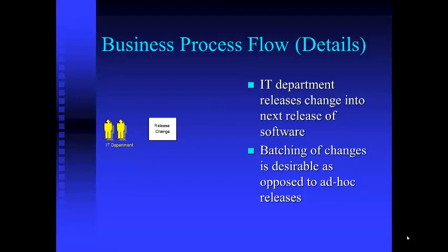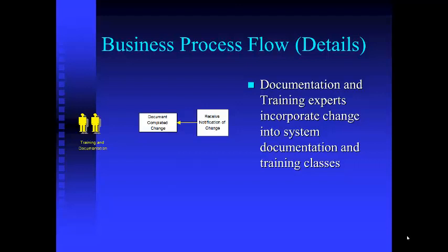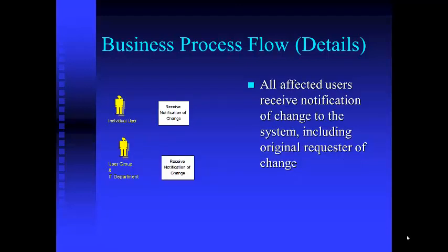Batching of changes — putting them all together into a larger group and releasing perhaps once a week or twice a month — is more desirable than ad hoc releases because it keeps the system stable. The documentation and training experts incorporate the change into system documentation and training classes. Then all affected users receive notification of the change, including the original requester. It's important to close the loop on things.